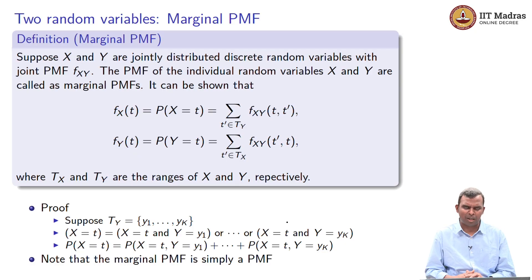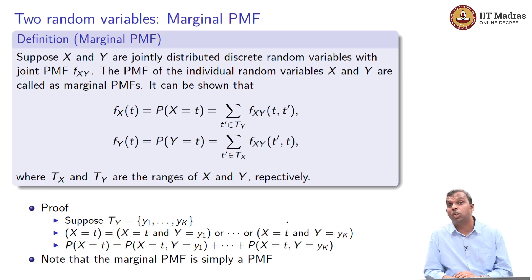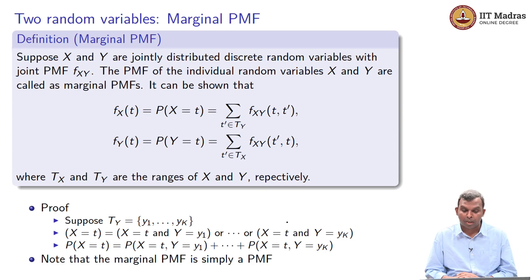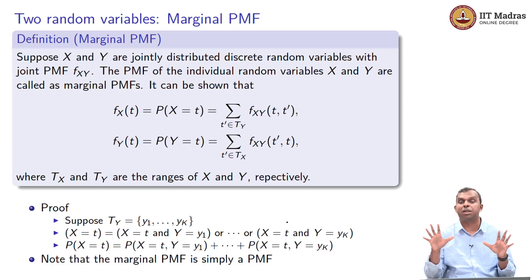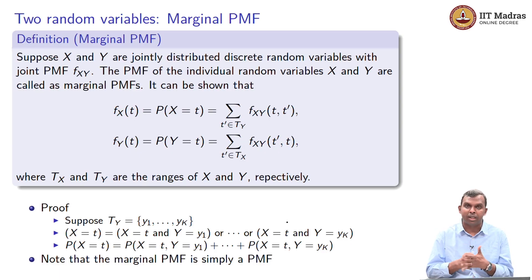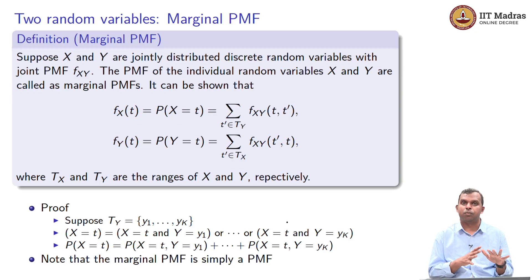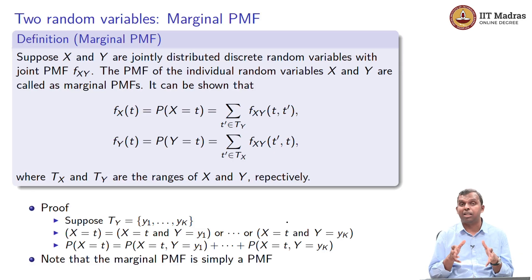Let us define marginal PMF. Starting with two jointly distributed random variables X and Y with a joint PMF f_{XY}, the PMF of the individual random variables — given that you start with the joint PMF and not the individual random variables — how do you go from the joint to thinking of X as an individual random variable? X and Y are each random variables on their own with their own PMFs. Those individual PMFs, when you have joint distributions, are called marginal PMFs.